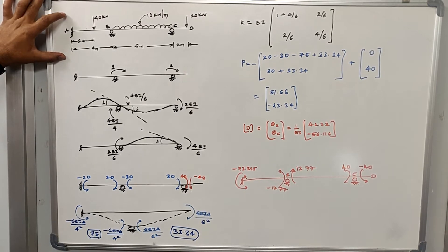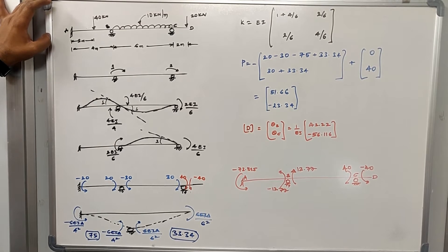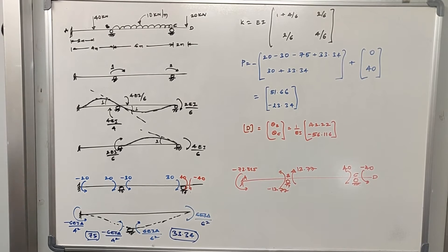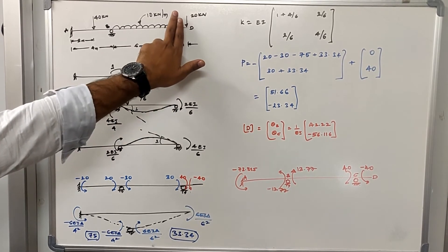This continuous beam has three spans: AB, BC, and CD, with CD being a cantilever. Span AB is subjected to a 40 kN concentrated load, and span BC is subjected to a UDL of 10 kN per meter. The length of member AB is 4 meters and member BC is 6 meters. The I value is not given, so we consider it constant for all spans, meaning the flexural rigidity remains the same. The first step in the stiffness method is to identify the kinematic indeterminacy, and we neglect the cantilever portion.